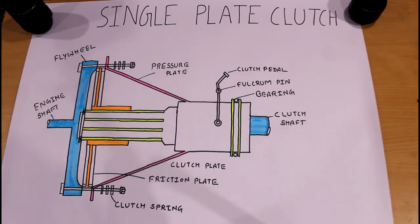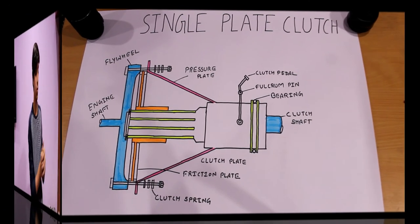In a multi-plate clutch, if there will be two clutch plates, there will be three friction plates. If four clutch plates, then five friction plates will be present. So this is single plate clutch.